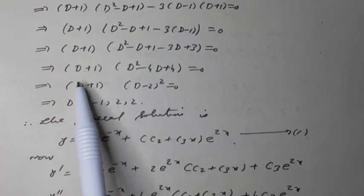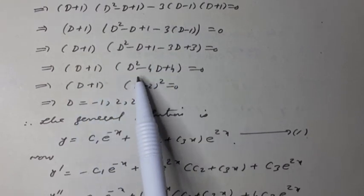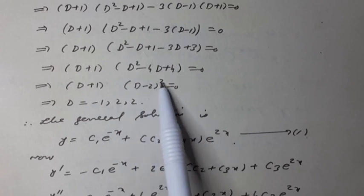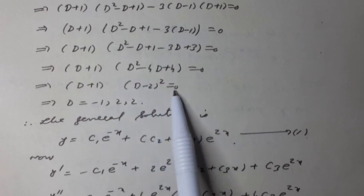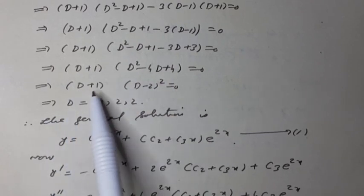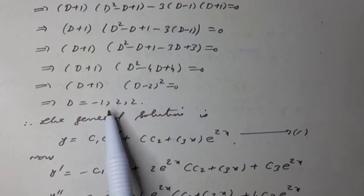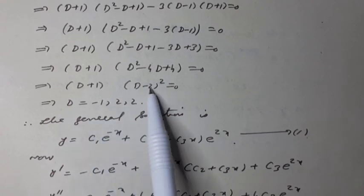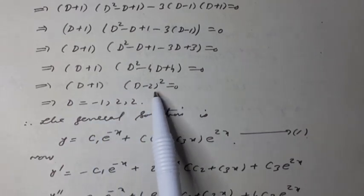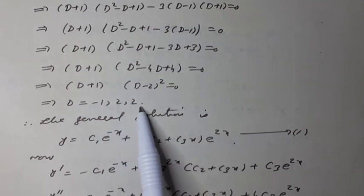This simplifies to (D + 1)(D² - 4D + 4) = 0, and further to (D + 1)(D - 2)² = 0. This implies the roots are D = -1, 2, 2 — noting that 2 is a repeated root due to the square.